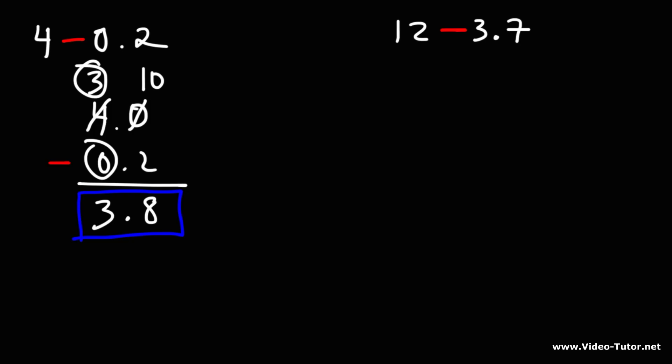Now let's do the same thing for the next example. So 12 minus 3.7. The 7 is in the 10th place, so we're going to add 1 0 to the 12 in the 10th place. Now, 0 minus 7 will give us negative 7, so we don't want to do that.